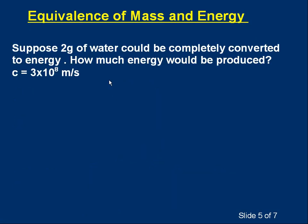Here's the first one, and I'd like you to have a go for yourself. So I'll read it out. Suppose two grams of water, that could be any substance at all, two grams of water could be completely converted to energy. That's very difficult to do, but let's just suppose somehow or other we could completely convert this two grams of water to energy. How much energy would be produced? There's a value of c. Pause the video, have a go for yourself.